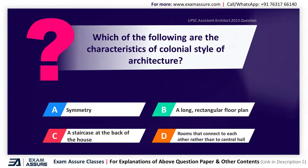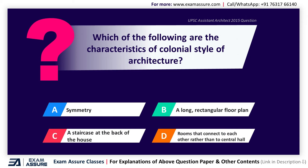Next question. Which of the following are the characteristics of colonial style of architecture? Option A: Symmetry, Option B: Long rectangular floor plan, Option C: Staircase at the back of house, Option D: Rooms that connect to each other rather than the central hall. The correct answer is Option A, Symmetry.